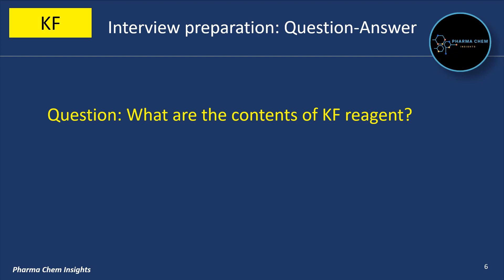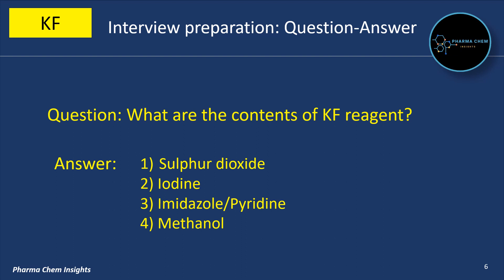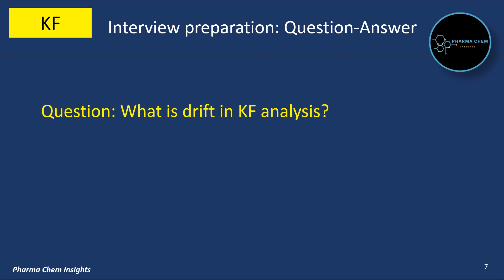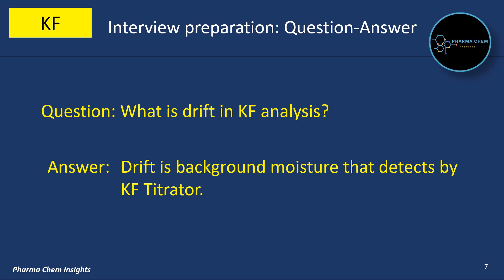What are the contents of KF reagents? The contents are sulfur dioxide, iodine, imidazole or pyridine, and methanol. Previously, pyridine was used as a base to prepare KF reagents. Afterwards, it was found that pyridine is carcinogenic, toxic, and harmful to the human reproductive system. So pyridine was replaced by imidazole as a base.